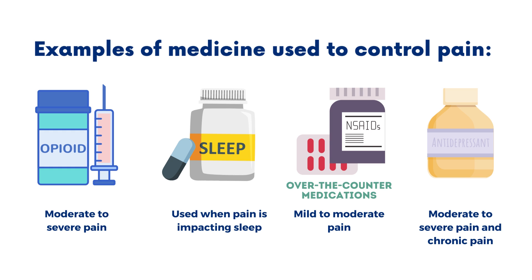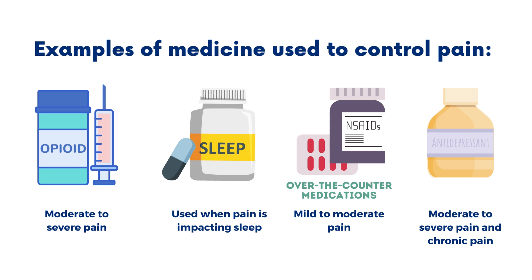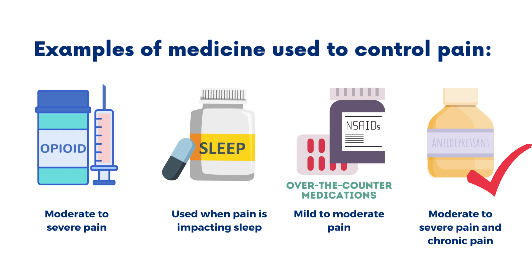Here are examples of medicines used to control pain. Opioids are used for moderate to severe pain — they are a prescription medicine. Sleep medicines are used when pain is impacting your sleep. Over-the-counter medications like acetaminophen and ibuprofen help reduce mild to moderate pain. Antidepressants are also prescribed and help reduce moderate to severe pain, and are used for chronic pain.